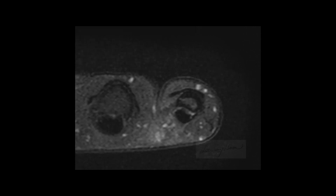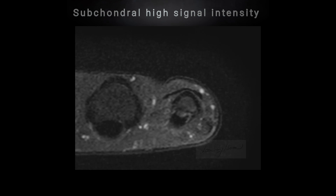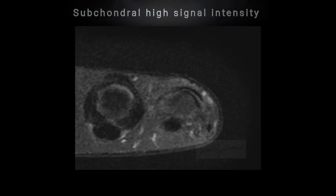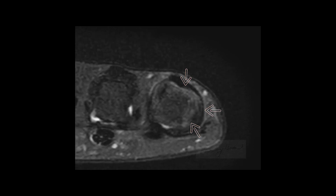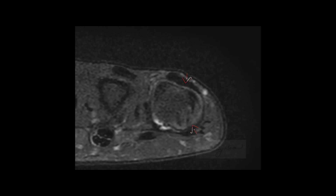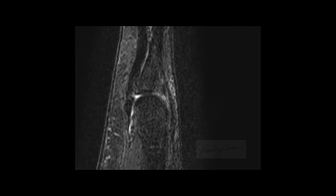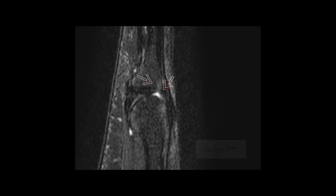Axial T2-weighted image. I am going to move cranially. Axial scan along the subchondral region of proximal phalanx — note the subchondral high signal intensity. At the joint level, axial scan along the subchondral region of the fifth metacarpal head — note the subchondral high signal intensity. Sagittal T2-weighted image, moving from radial to ulnar side. There is a defect of low signal intensity at the cortical margin and subchondral bone marrow in the proximal phalanx, and loss of low signal intensity of the cortex with subchondral high signal intensity in the distal metacarpal bone.